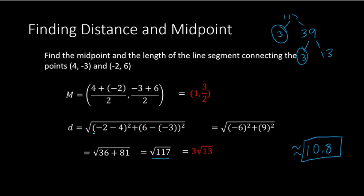Remember, it doesn't matter which direction you subtract the x values. Whether you do 4 minus negative 2 or negative 2 minus 4, when you square the result you get the same positive value. So the order of subtraction doesn't affect the final distance.